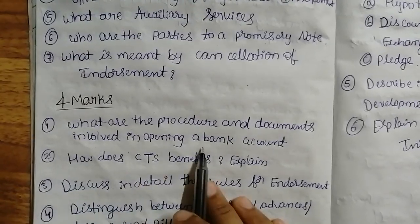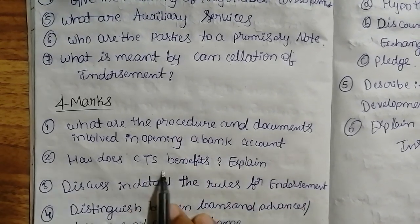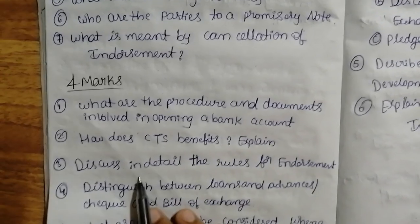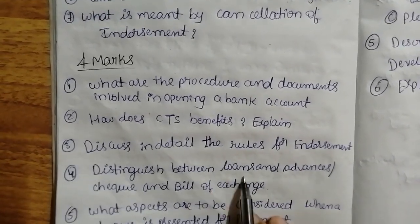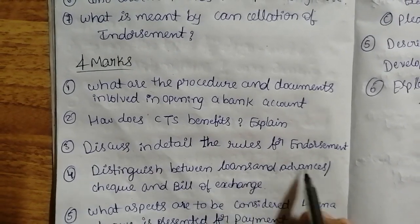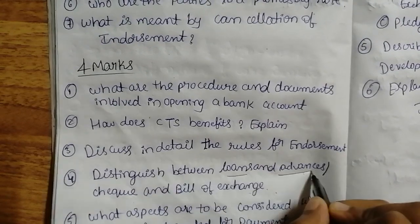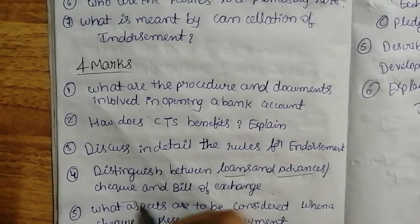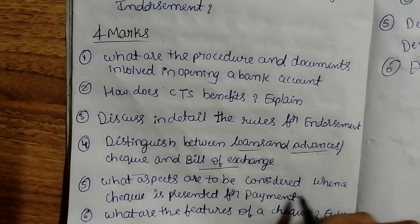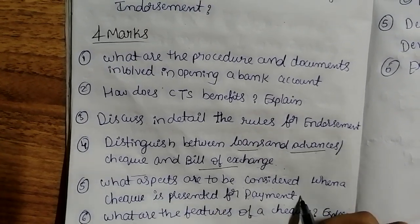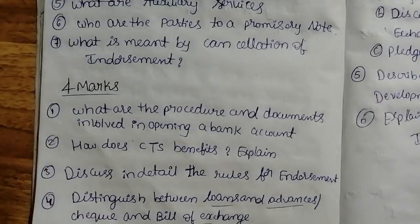Next we have four-mark questions: What are the procedures and documents involved in opening a bank account? How does CTS benefit — explain. Discuss in detail the rules of endorsement. Distinguish between loans and advances, or cheque and bills of exchange. What aspects are to be considered when a cheque is presented for payment? What are the features of a cheque? These are the four-mark questions.